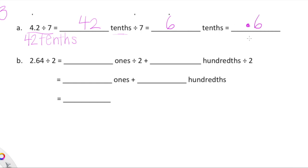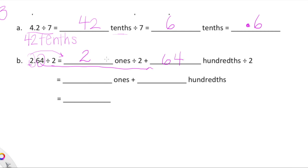6 tenths in standard form is 0.6. Let's check out another one: 2.64 divided by 2. We can rename this as 2 and 64 hundredths, or we could say 264 hundredths. So 2.64 divided by 2 is equal to 2 ones divided by 2 plus 64 hundredths divided by 2. We're decomposing this because we want to be able to do it in our head.